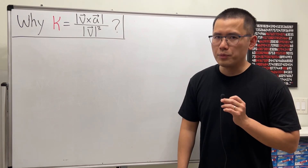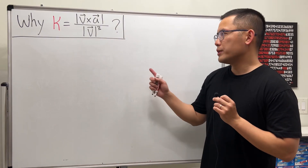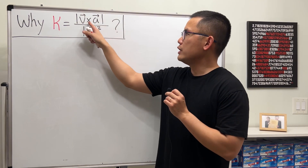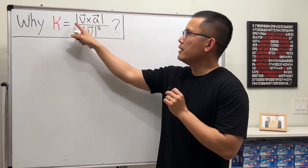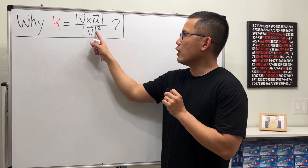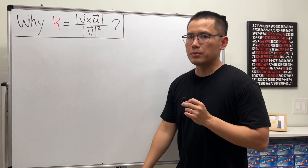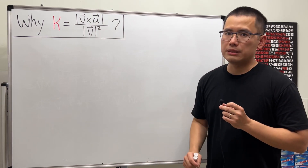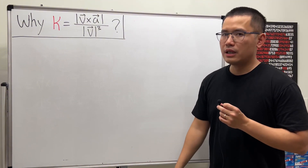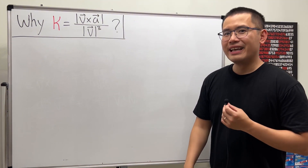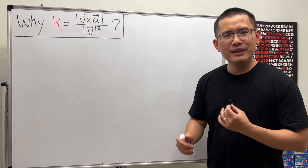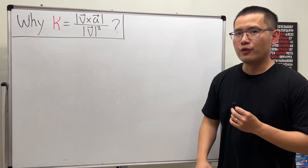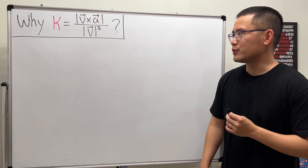Today we are going to prove a very nice formula for computing the curvature. This is equal to the magnitude of the cross product of v and a, divided by the magnitude of v raised to the third power. If you have a curve in 3D space, this formula is pretty easy to use. For a curve in a plane, you can check my other video where I showed all the formulas for computing curvature.